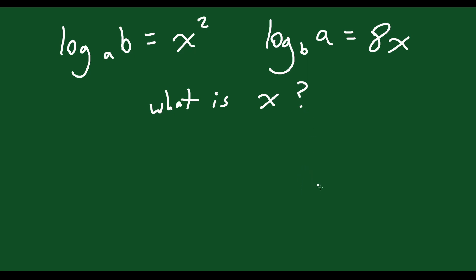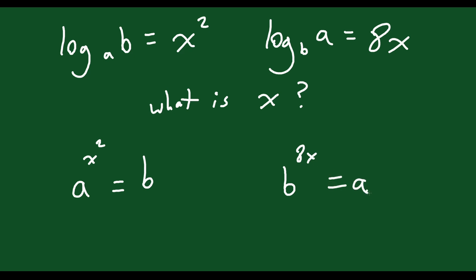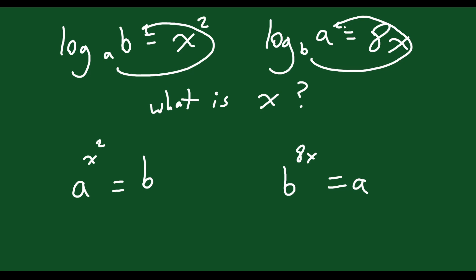How can we solve this? Well, in each scenario, I want to change these to exponents — that might be the best way to go about it. On the left, you could say a to the exponent x squared is equal to b. And on the right, you could say b to the exponent 8x is equal to a. Just go around the horn — that's how you do this. b to the 8x equals a.